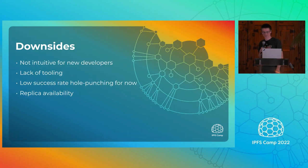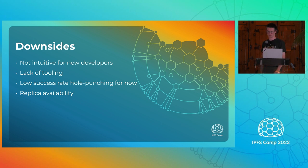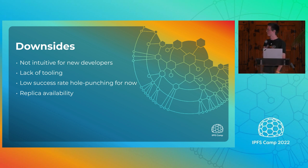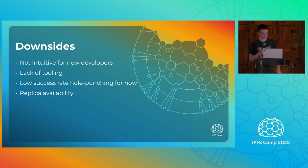There are a few downsides. Sometimes they're not very intuitive for developers. A lot of times people would come into the OrbitDB community chat and ask why their state's not the same as their peers and why there's this lack of global state, which is sometimes hard for new people to understand. There's also not as much tooling yet, and JSLibP2P hole punching is not ready, but it's on the roadmap for the first quarter of 2023, which I'm pretty excited about.